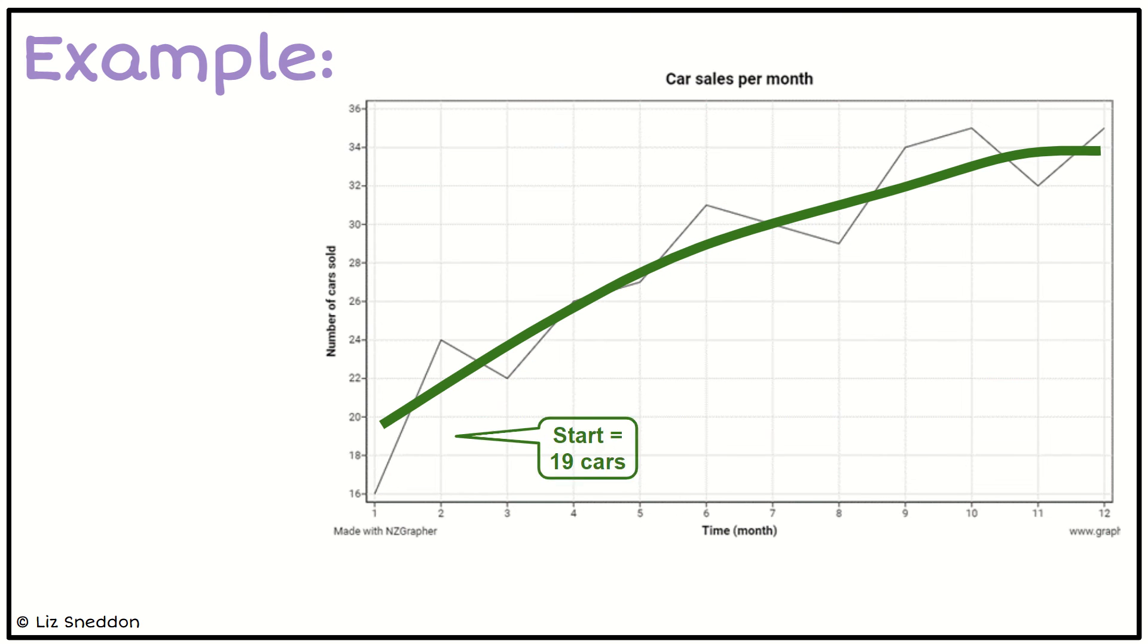So that's my trend line. And I want to know, okay, what's the value at the start? Now notice the value of that green trend line. It starts around about 19 cars.